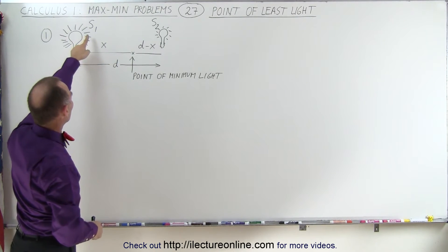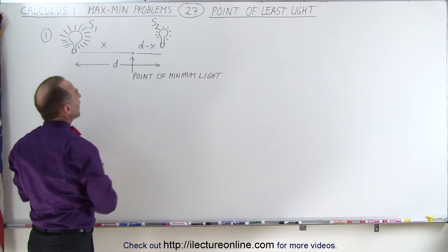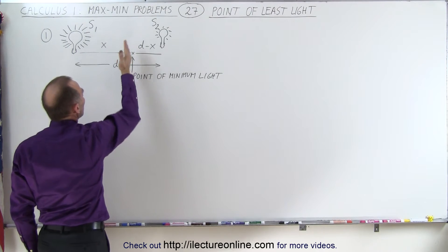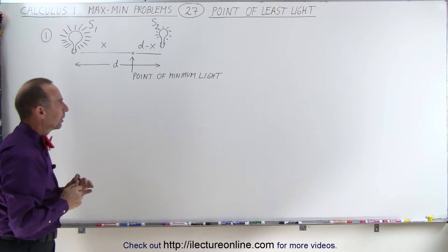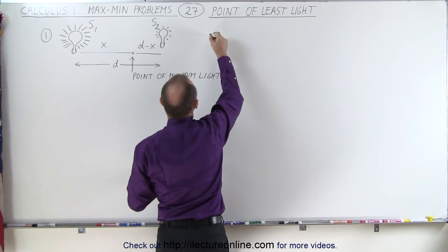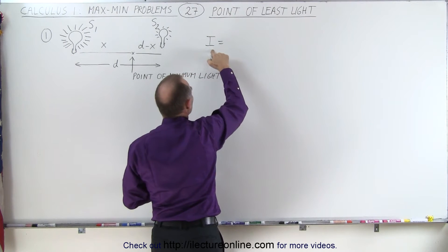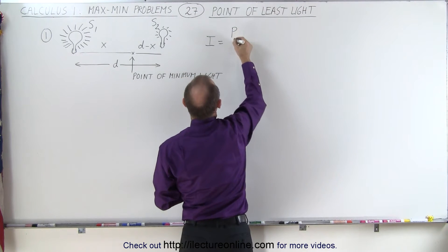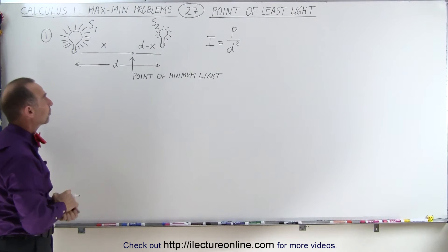The power of the sources is S1 and S2. The distance between the sources is d, and we're trying to find the point between the two sources where there is the minimum amount of light received from the two sources combined. We need to keep in mind that the intensity of the light at any point in space is equal to the power of the light divided by the distance from that light squared.